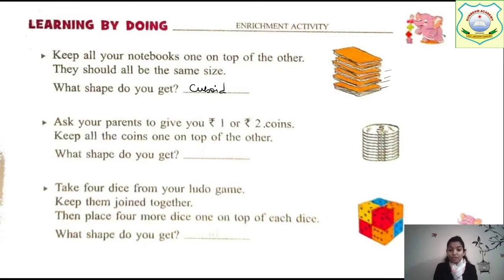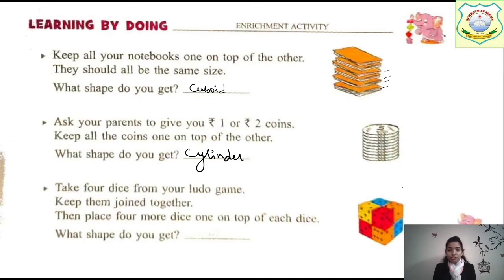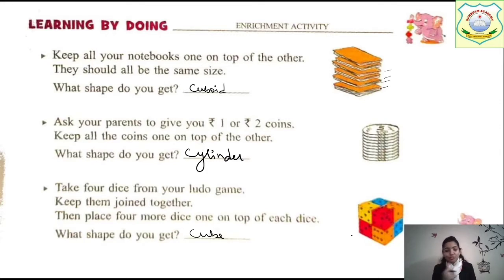Ask your parents to give you one-rupee and two-rupee coins. Keep all the coins one on top of the other — as we keep stacking them, what shape will it become? It will become a cylinder shape. Now take four dice from your Ludo game and keep them joined together. Then place four more dice on top. What shape do you get? We will get a cube shape again, because they are all joined together.